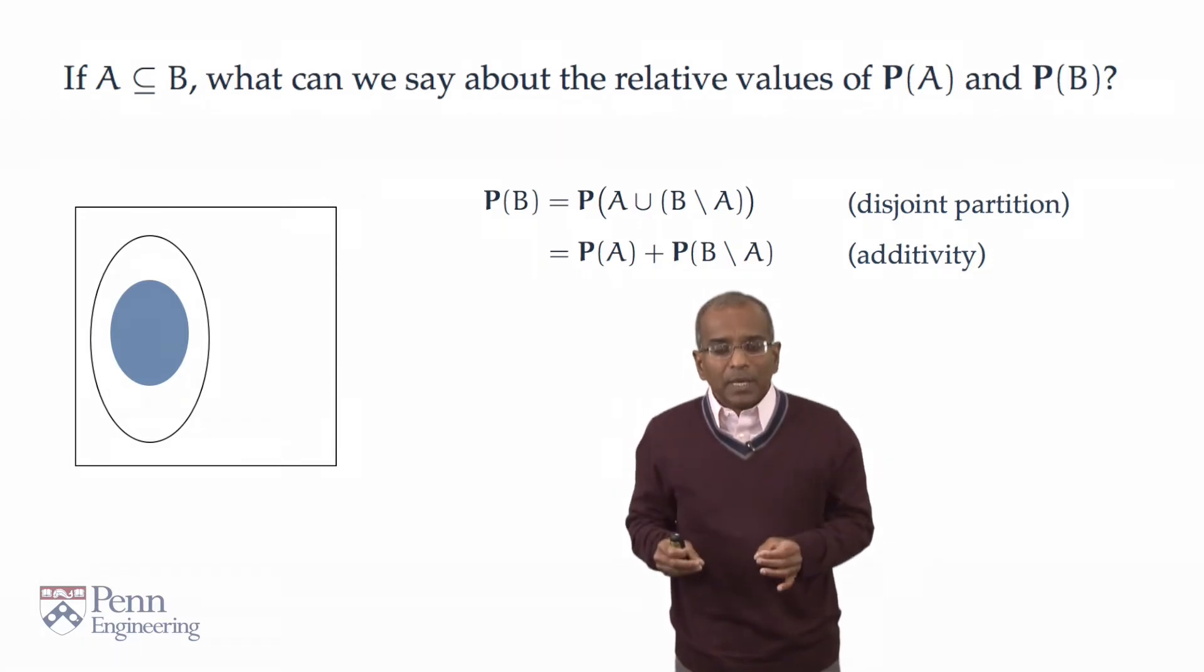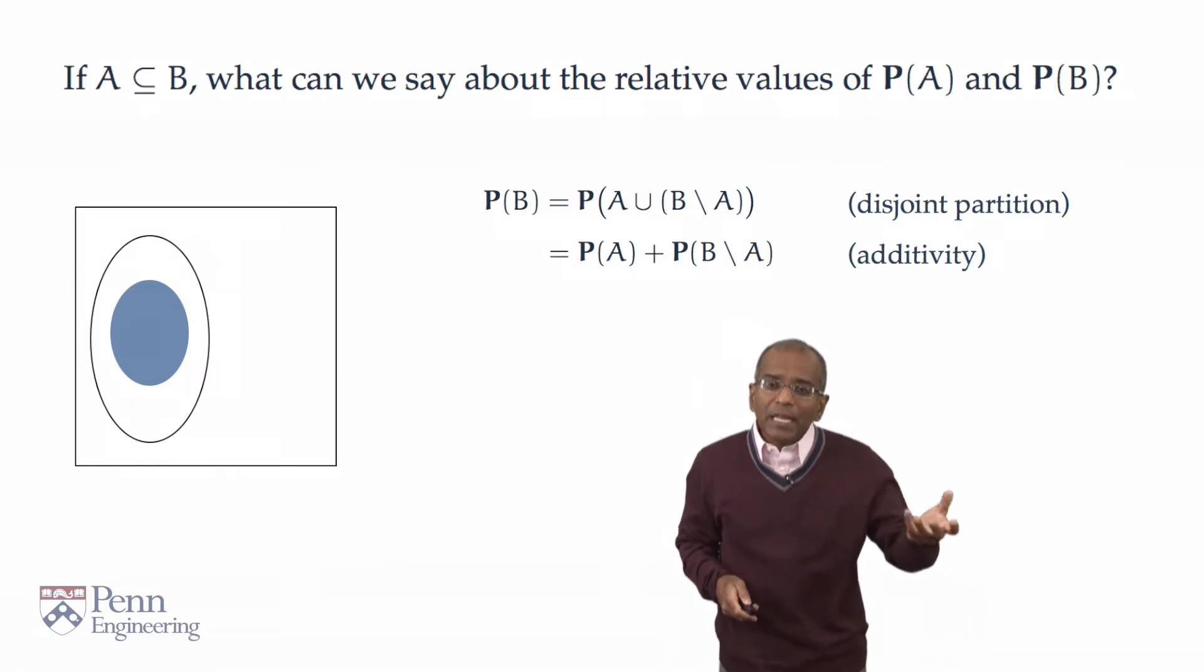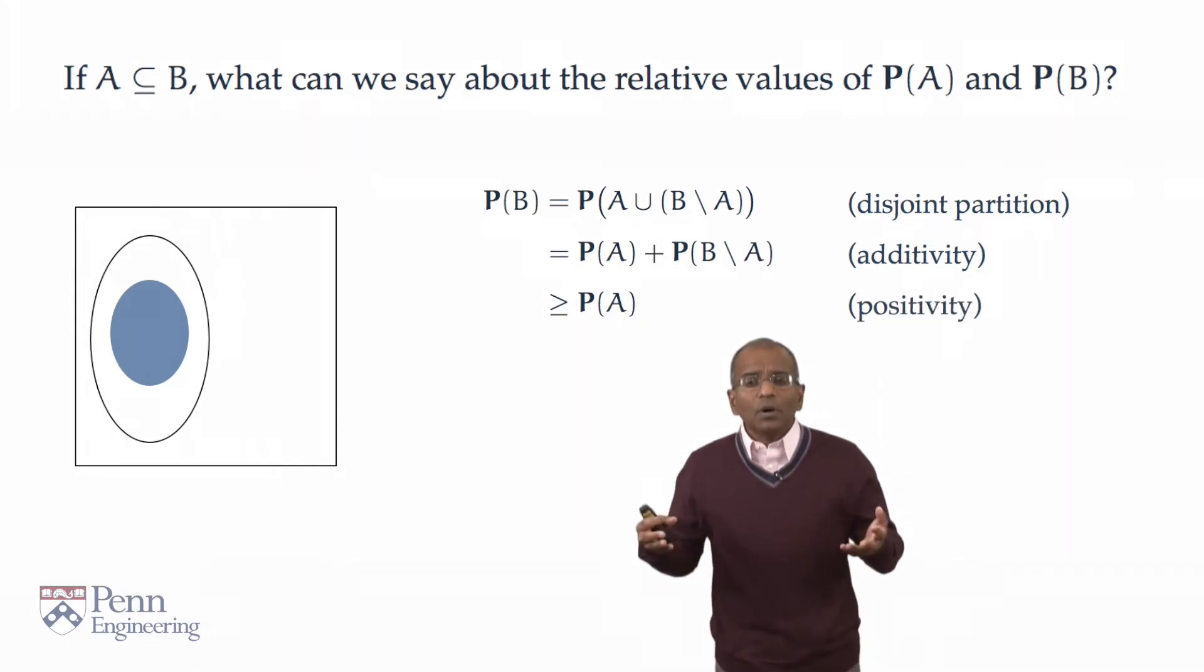And therefore, on the right-hand side, I've got the probability of A added to a non-negative quantity. If we eliminate, throw away that non-negative quantity, it can only decrease the value of the right-hand side. And therefore, via the positivity axiom, we come to the natural and inevitable conclusion that if A is a subset of B, then the probability of A can be no larger than the probability of B.